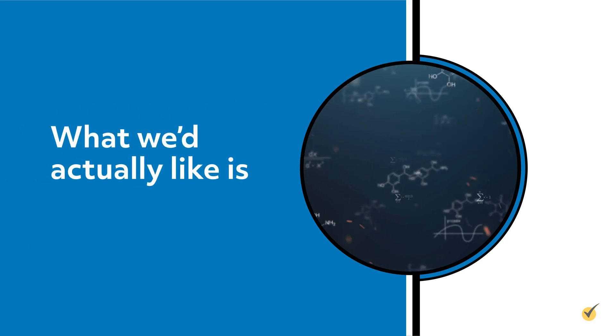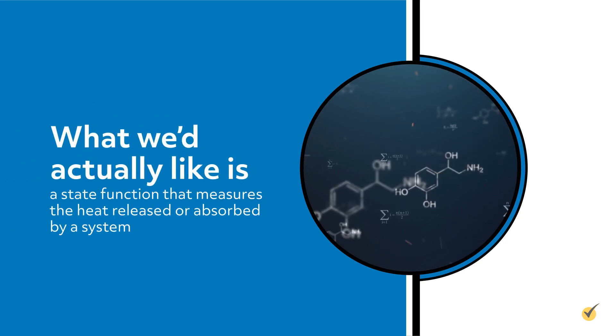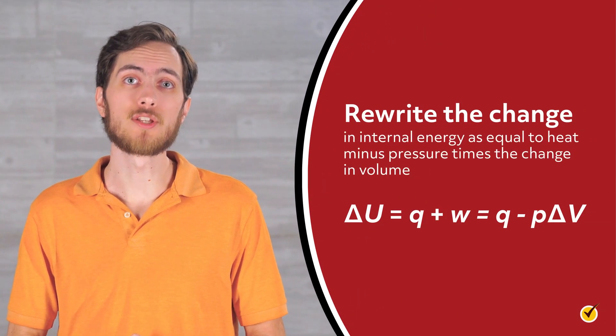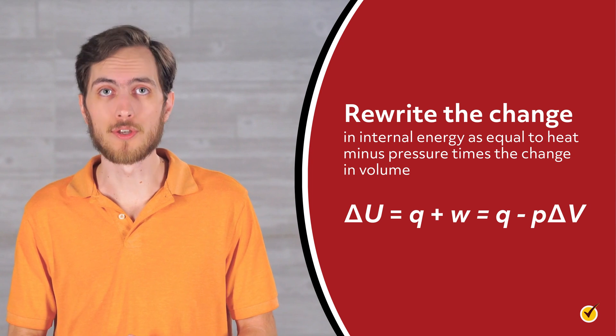So, what we'd actually like is a state function that measures the heat released or absorbed by a system. Spoiler, it's enthalpy. But how do we get there? First, we'll begin with the change in internal energy and start by assuming that the only type of work done by our system is pressure volume work, which means we're ignoring all other types of work the system could be doing, like electrical, radiant, etc. So, we rewrite the change in internal energy as equal to heat minus pressure times the change in volume.